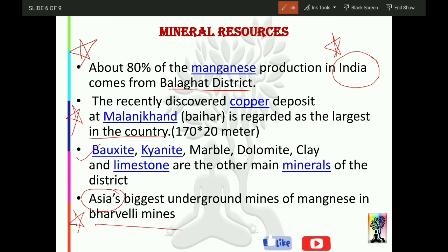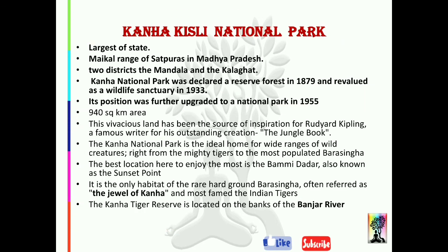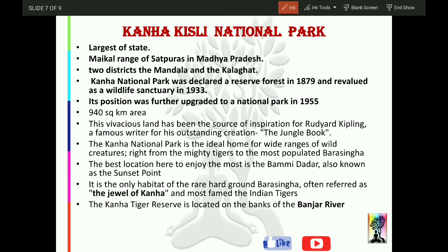India's total 60% manganese comes from here — keep these facts clear so you are not confused. Another important thing: Kanha Kisli National Park is also here. It is the largest national park in Madhya Pradesh. It is located in the Maikal ranges of Satpura. It spans two districts — Mandla and Balaghat.